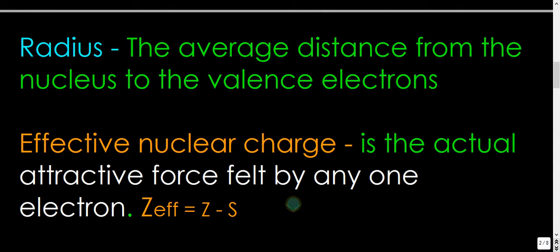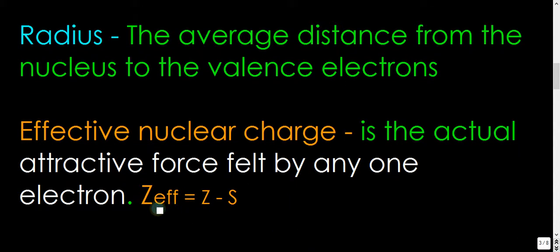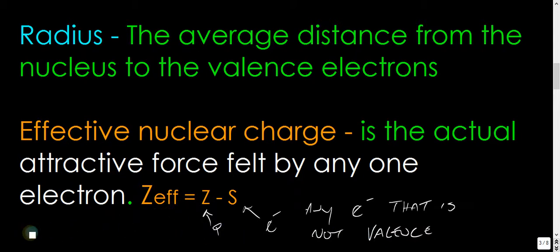Your effective nuclear charge is the actual attractive force felt by any one electron. So, right here would be effective nuclear charge. This is your proton. And this would be your shielding electrons. And basically, your shielding electrons are any electron that is not a valence electron. And this is the short and skinny version of it. I know there's one that's called Slater's Rule. He gets really specific with it. It's a more accurate determination. But this is a good estimate right here.